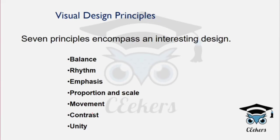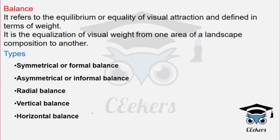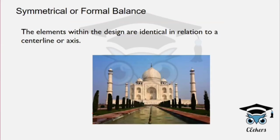We have a visual attraction and a vision in architecture. The main types of balance are: symmetrical or formal balance, asymmetrical or informal balance, radial balance, vertical balance, and horizontal balance.